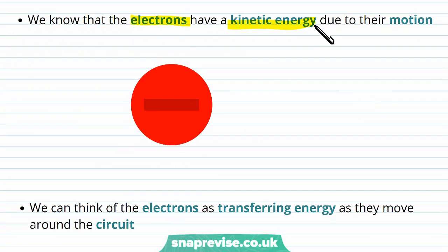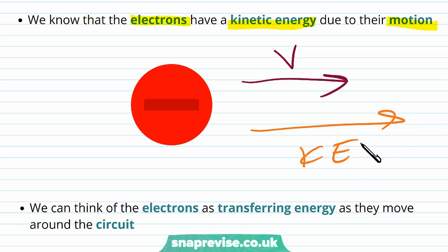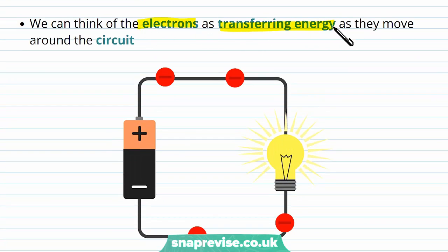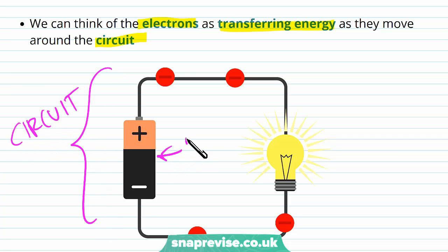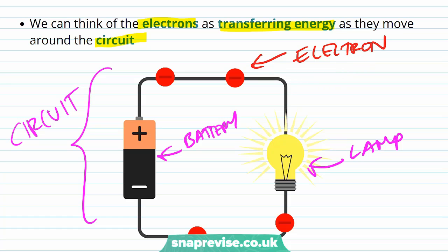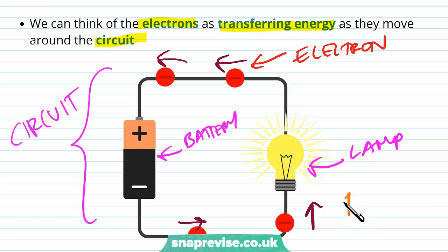We know that electrons have kinetic energy due to their motion. For example, this electron here is travelling with speed v, so it has some kinetic energy dependent on its velocity. We can think of the electrons as transferring energy as they move around the circuit. As they move around the circuit they transfer energy to different components, and this energy comes from their kinetic energy.